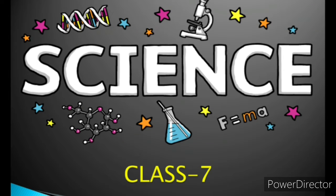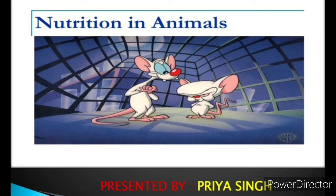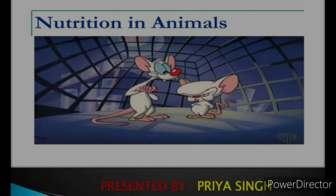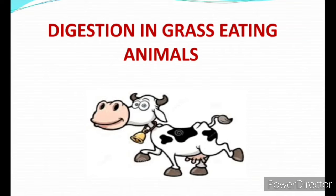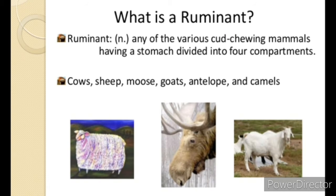In this video we will continue our chapter of Class 7 nutrition in animals, talking about the digestion in grass-eating animals. First of all, what is a ruminant? Herbivorous animals such as buffalo, cow, goat, sheep, deer etc. mainly eat grass. Grass is a rich source of carbohydrate called cellulose.